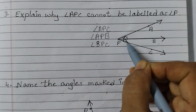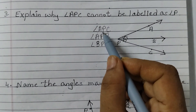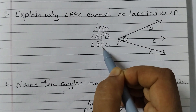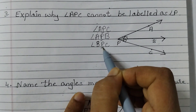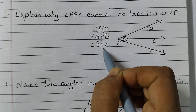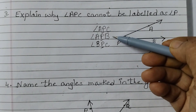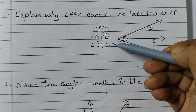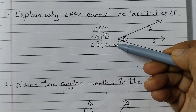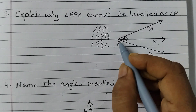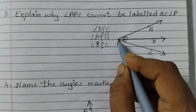If you see here, the middle letter of angle APC is P, for angle APB it is also P, and for angle BPC it is also P. So if you say angle P, which angle do you mean — this angle, this angle, or this angle? There would be a lot of confusion.